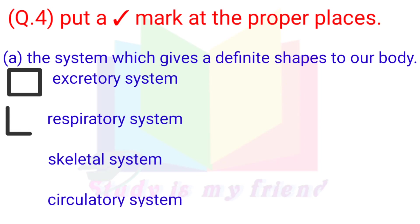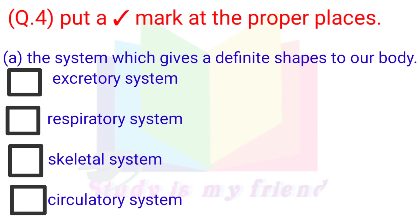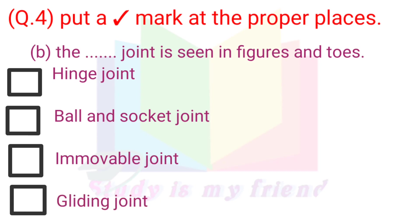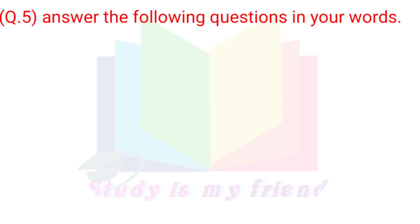Question 4: Put a tick mark at the proper places. A. The system which gives a definite shape to our body — Skeletal system. B. The joint seen in figures and toys — Hinge joint.